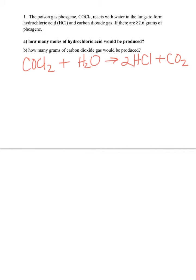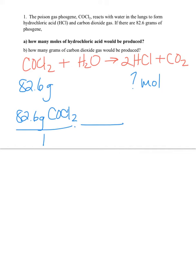Now we're ready to start the problem. We have 82.6 grams of COCl2, and in the first question we would like to know how many moles of hydrochloric acid would be produced. Because we start with the COCl2 and would like to answer a question about the HCl, we're going to use stoichiometry. Start with what you know — 82.6 grams of COCl2. We don't want grams, so we're going to cancel that and convert to moles so that we can do our stoichiometry. One mole of COCl2 has a molar mass of 98.91 grams.